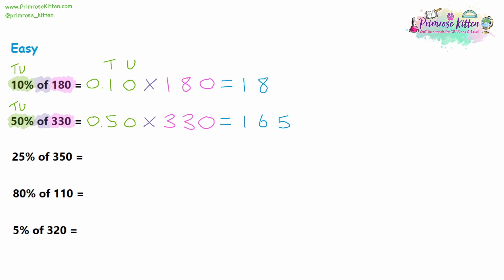We can check our answer here, because 50% is the same as a half. So is 165 around about a half of 330? Sounds about right. Question three, we have 25% to start off with. Looking at the tens column and the units column as our first two decimal places, we would have 0.25. Then we have 'of', so we are multiplying, and then we have 350. So type into your calculator 0.25 multiplied by 350 — you are going to get 87.5.